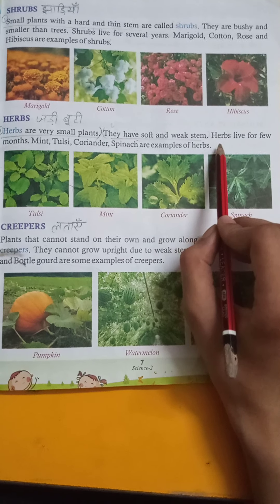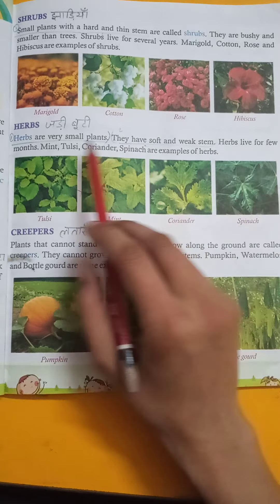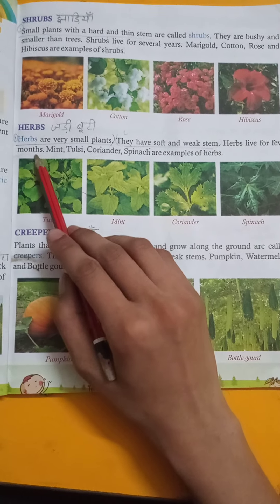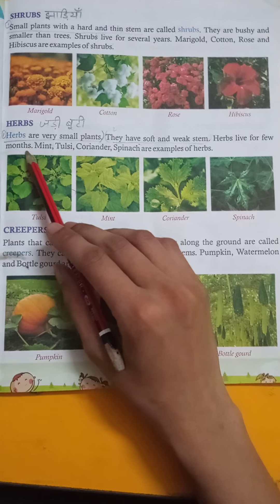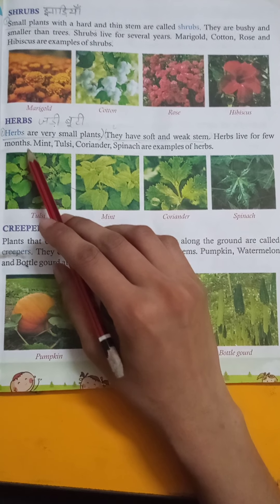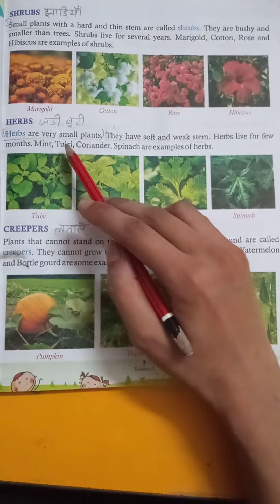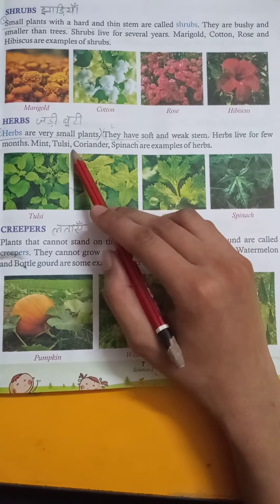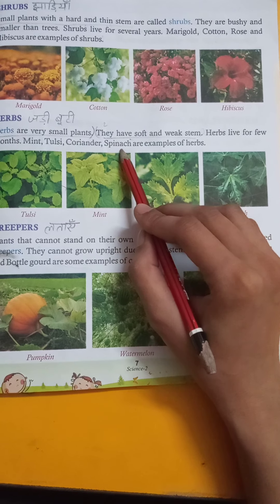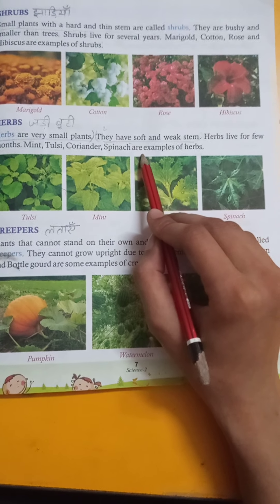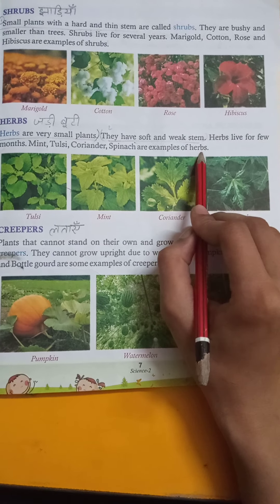Herbs live for only a few months. Mint, tulsi, coriander, and spinach are examples of herbs.